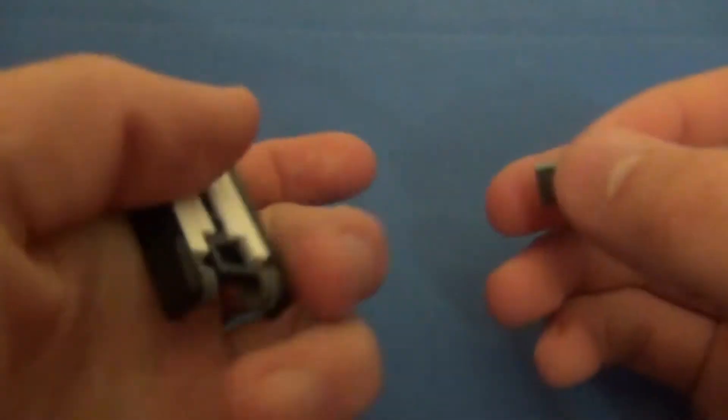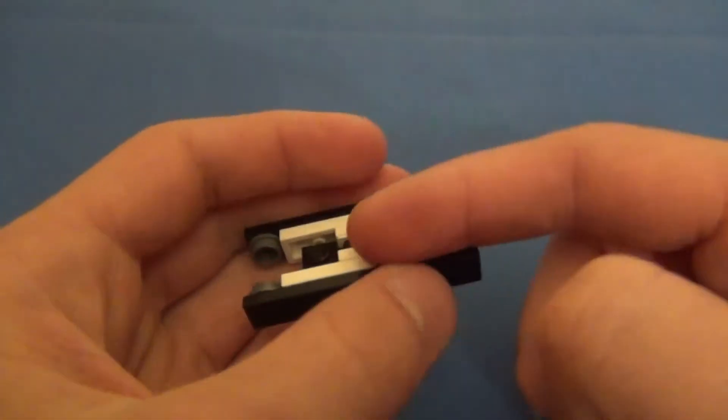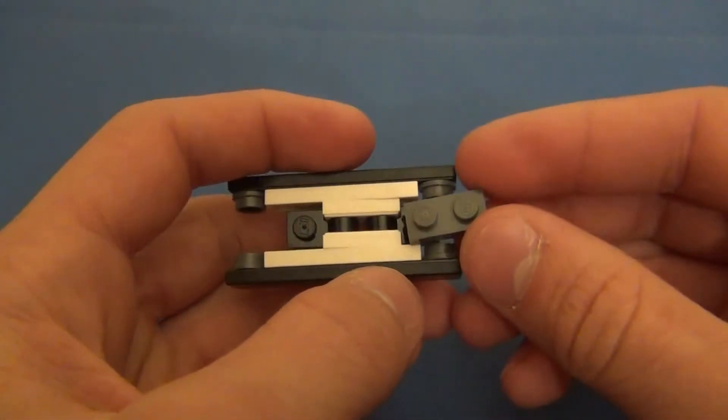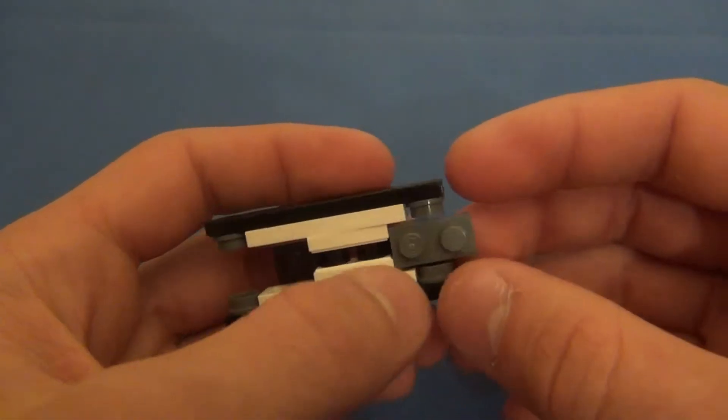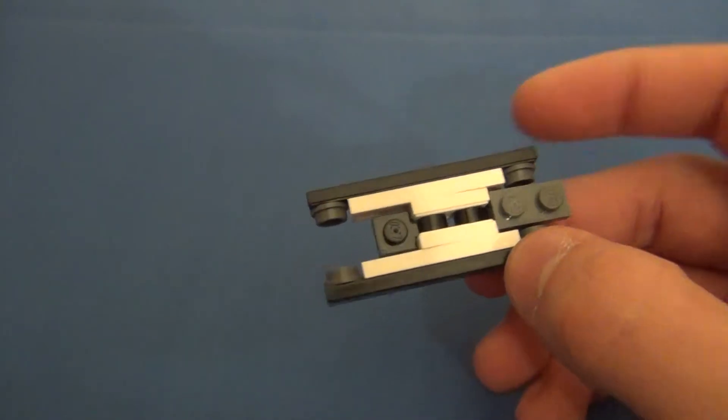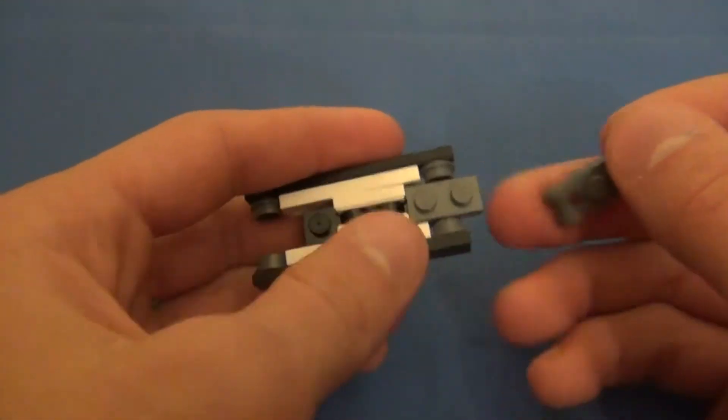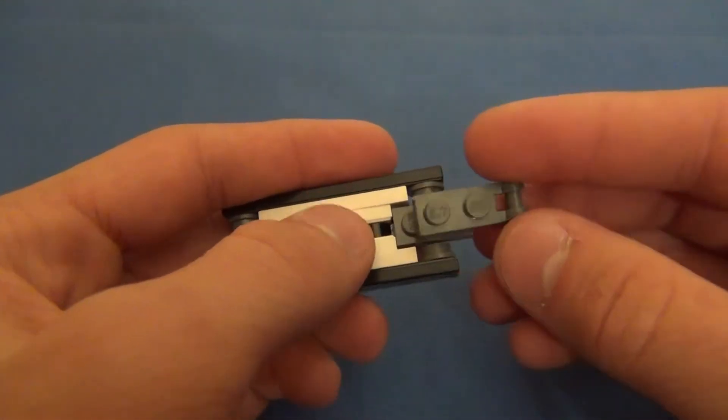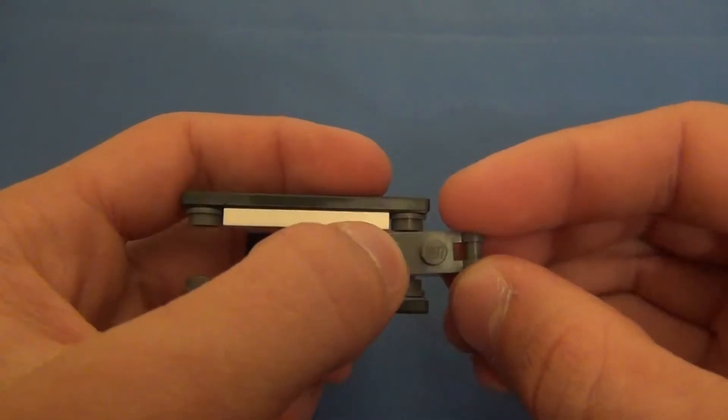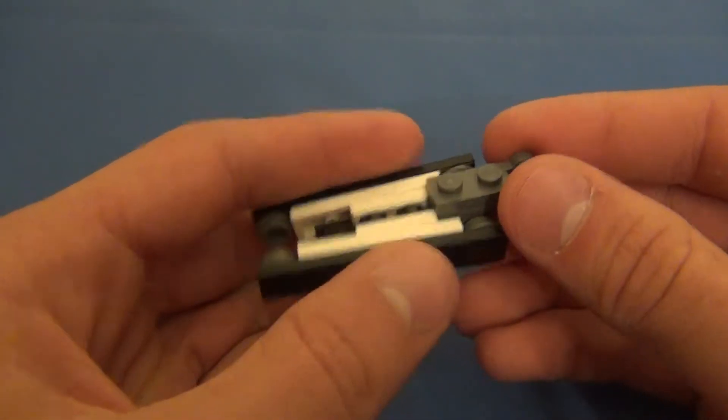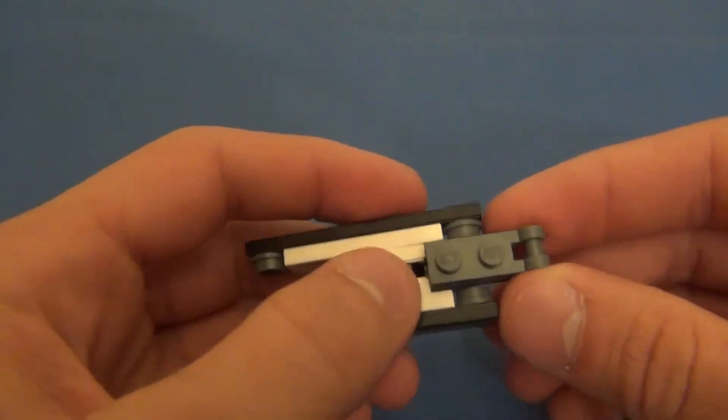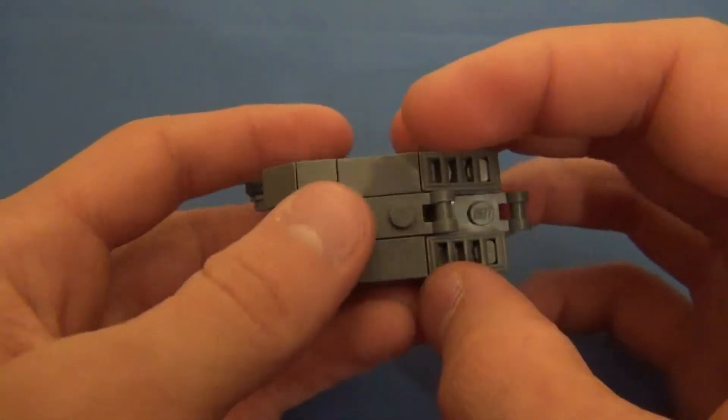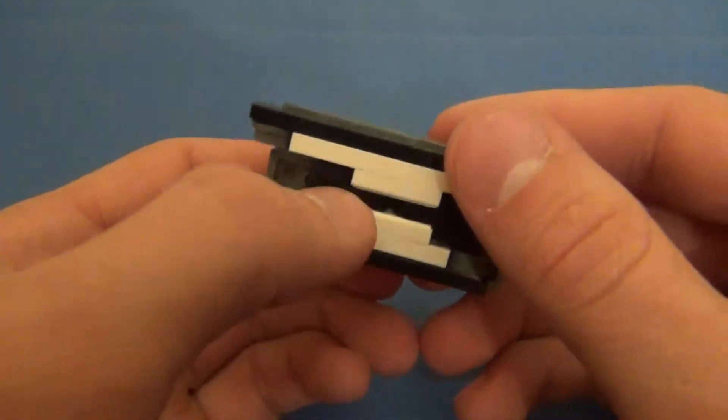Now you'll take the body or the chassis and you'll put one 1x2 plate, or the last 1x2 plate, put it on this end like that. And then you'll take the last 1x2 plate with the bar and put it on top of it like that, and then you'll put the body on just like that.